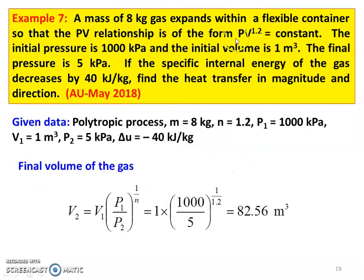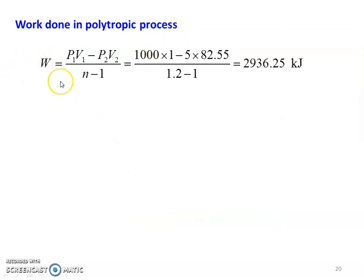Finding the final volume using the polytropic process relation: V2 equal to V1 into (P1 divided by P2) to the power (1 divided by N), equal to 1 into (1000 divided by 5) to the power (1 divided by 1.2), equal to 82.56 meter cube. Then, work done for the polytropic process: W equal to (P1V1 minus P2V2) divided by (N minus 1). Substituting: (1000 into 1 minus 5 into 82.55) divided by (1.2 minus 1), equal to 2936.25 kilojoules.